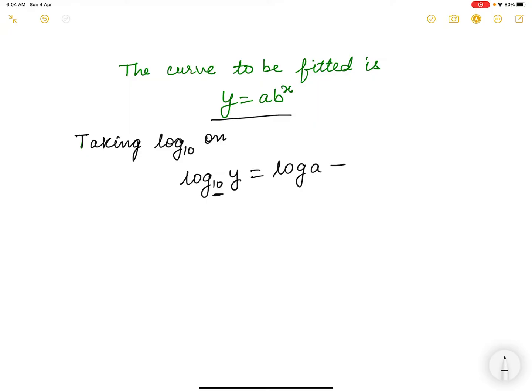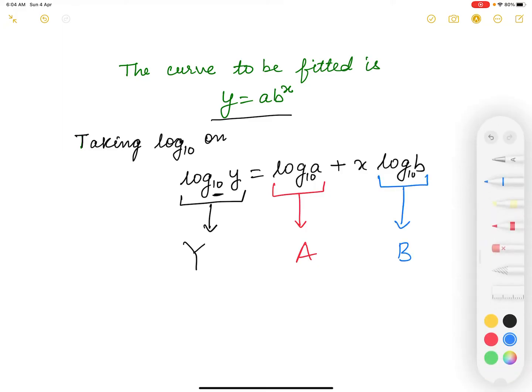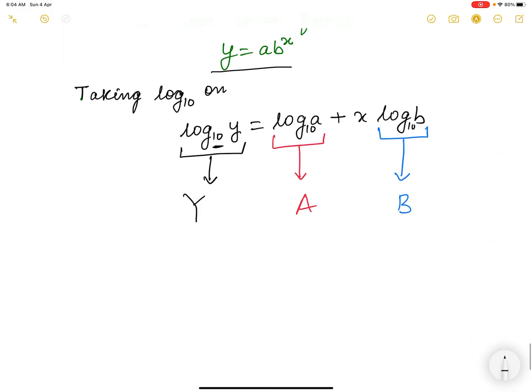So on taking log, we have log y equals log a plus x log b. Now what do we do? We substitute this as capital Y and you may substitute this as capital A and you may substitute this one as capital B. So in this way, this equation reduces to Y equals A plus capital B and here the variable x small x remains the same.